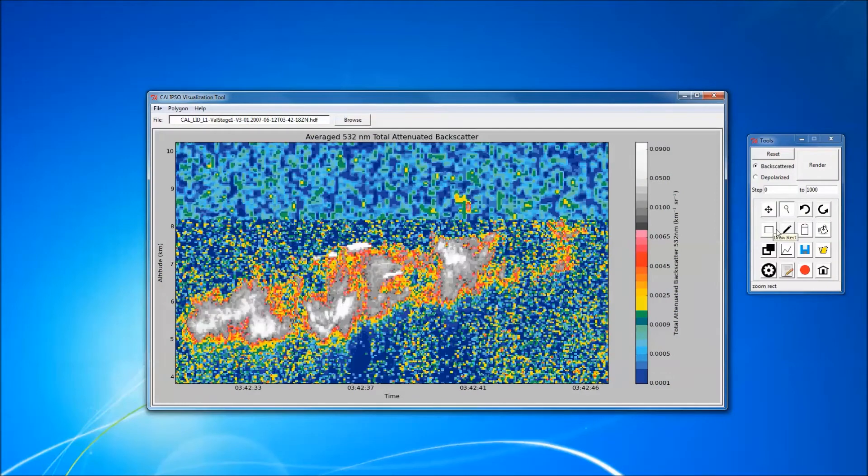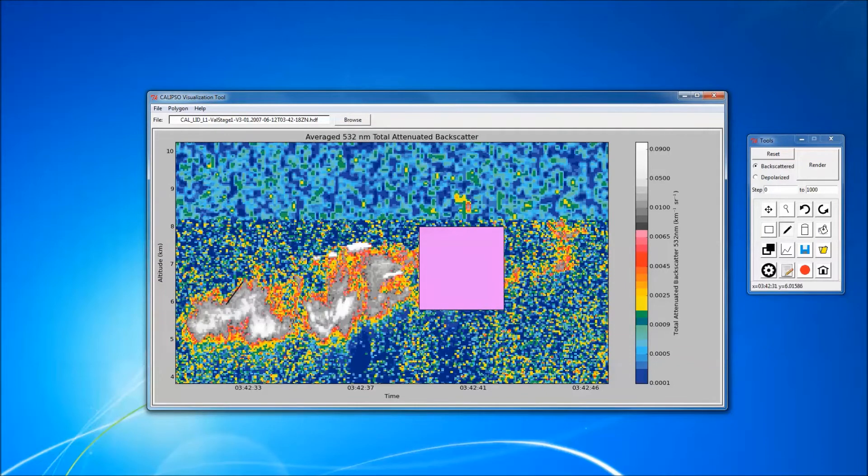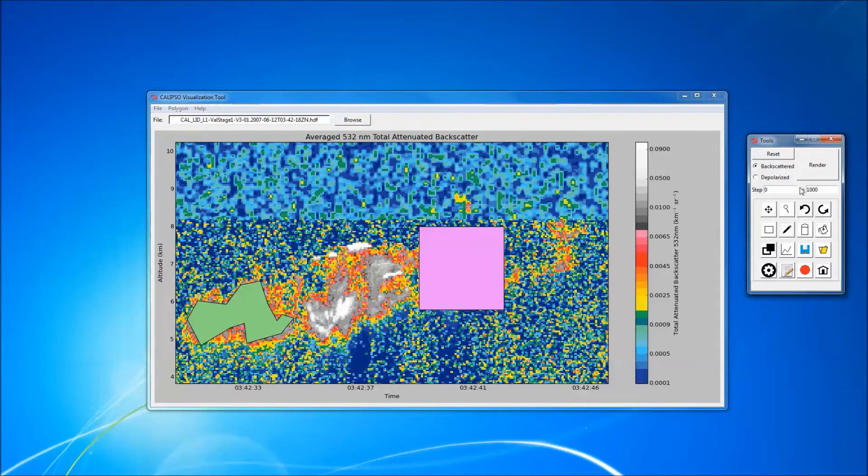Once visualized, users can select certain regions of the plot by drawing polygons such as rectangles or connecting vertices. These regions can later be used in a number of manipulations that will further allow researchers to take full advantage of what Calypso offers.